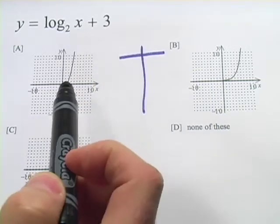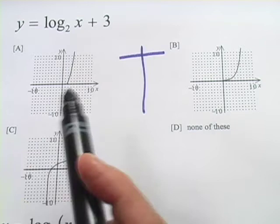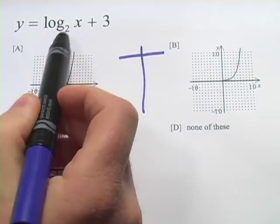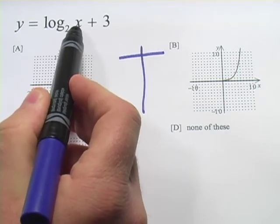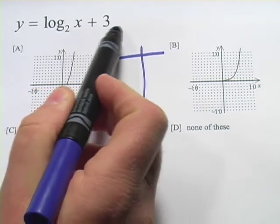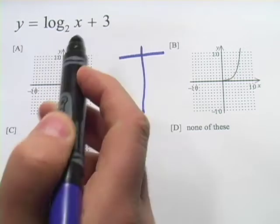But you want to be careful with your values for x here to make sure they're kind of easy to figure out. And remember, when we're dealing with logs, what this is saying is 2 to what power would give you x. And then in this case, we're going to have to add 3 to that to get the y value.